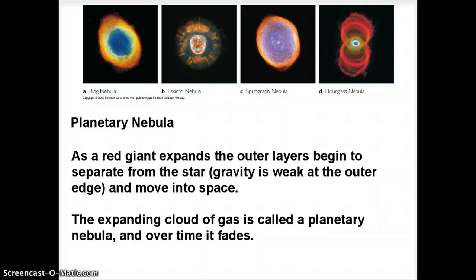You're seeing that in each of these pictures here. These are four famous examples of what we're talking about. There's a name for this expanding cloud of gas formed by the outer layers that are detaching themselves from the star, and it's called a planetary nebula.